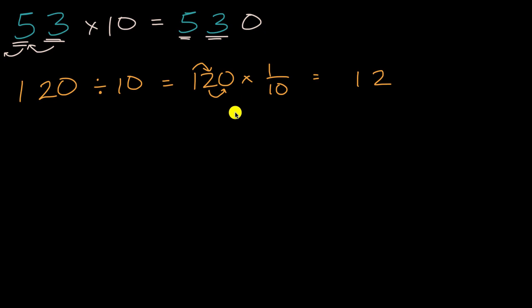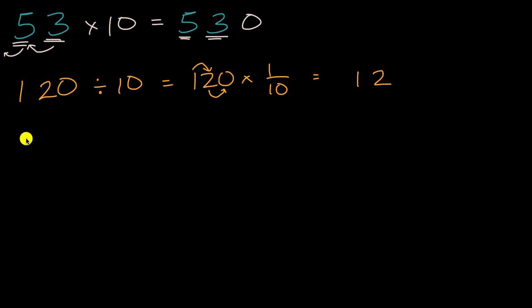So that was all review, but now we're going to extend this a little bit by thinking about things that have place values representing less than one — we're going to deal with decimals. So just to get ourselves warmed up, let's see if we could figure out what 3.015 times 10 is.